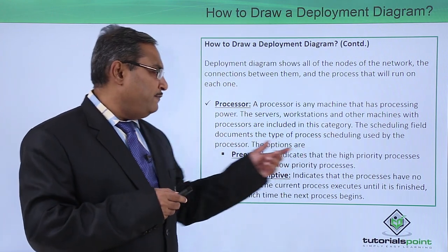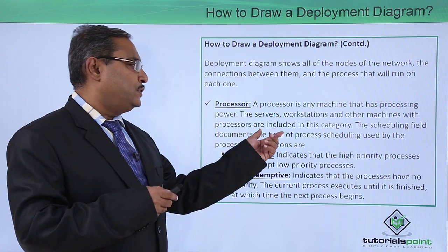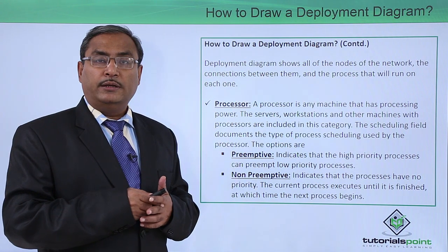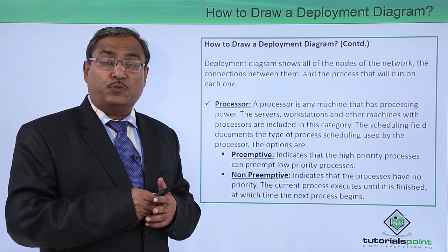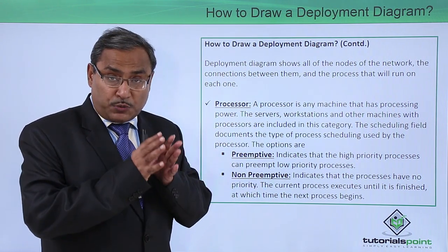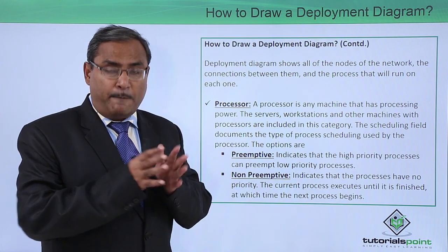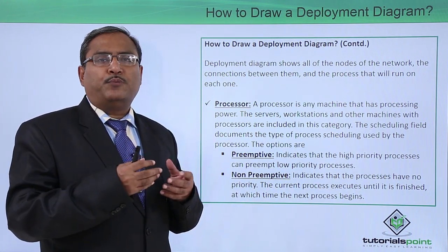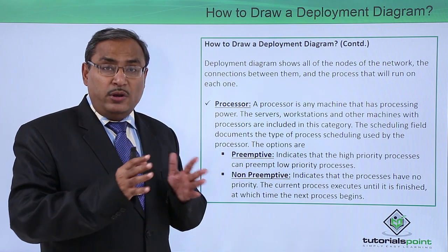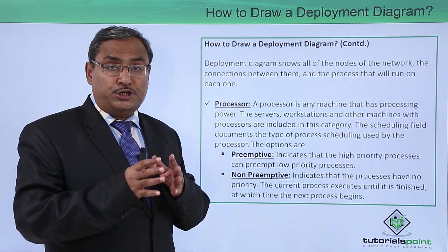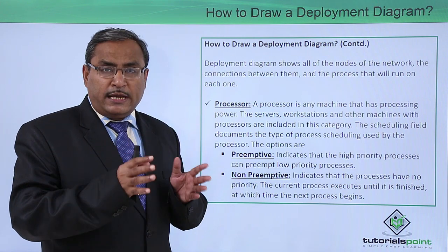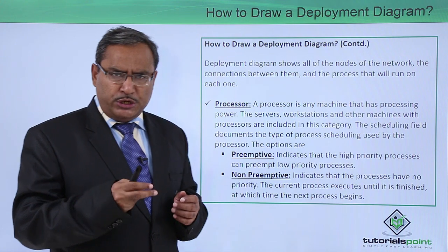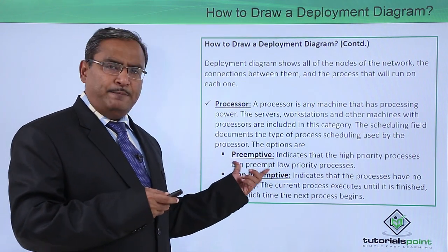The scheduling field documents the type of processor scheduling used by the processor. The processor processes multiple processes, and we need a scheduling criteria to select which waiting process gets processed next. Here we consider several different scheduling criteria. The first is pre-emptive.